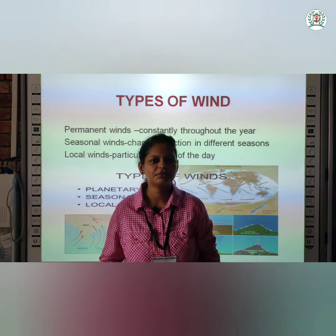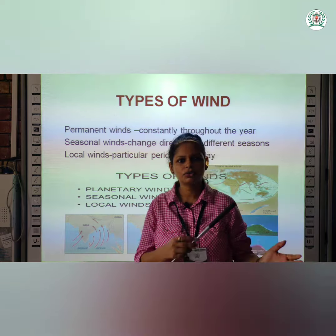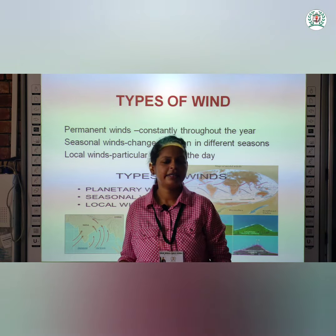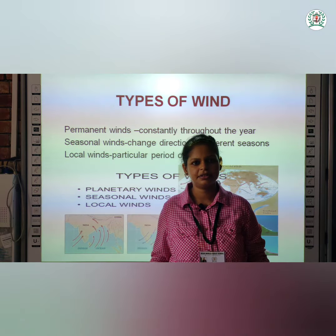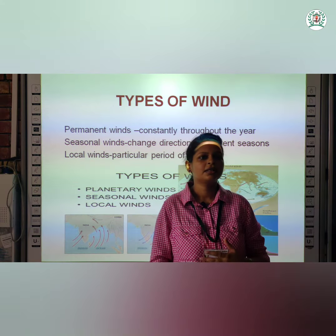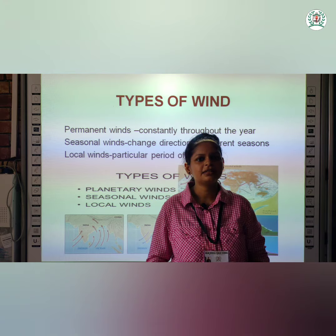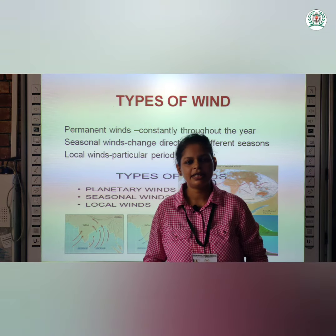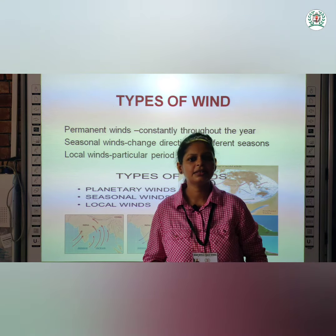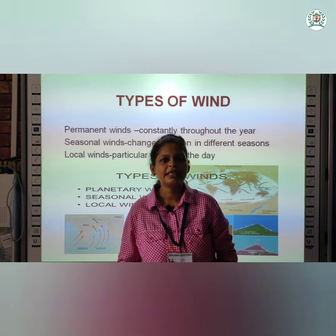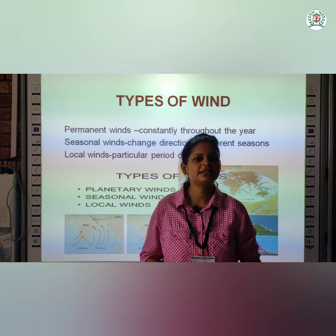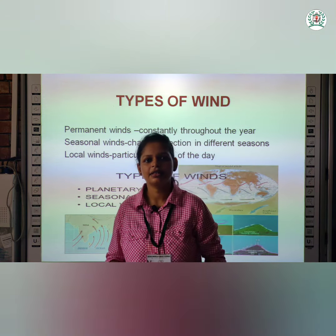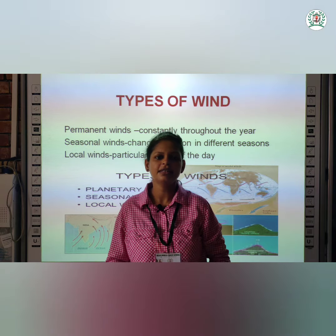First, let us take permanent wind. In permanent wind, the wind flows throughout the year — there is no change. The second one is seasonal wind. In seasonal wind, the wind changes its direction in the different seasons.